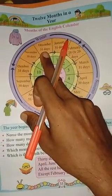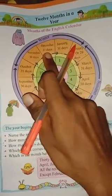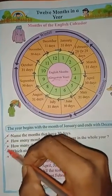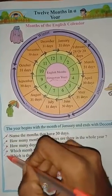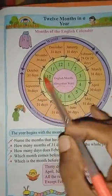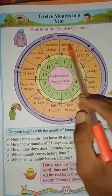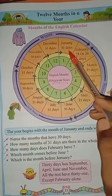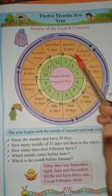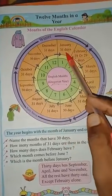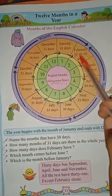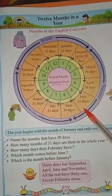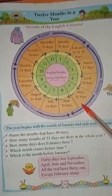All these questions and answers you are going to write in your notebook — how many days each month has. January has 31 days, February has 28 or 29 days — write all these things in your notebook.